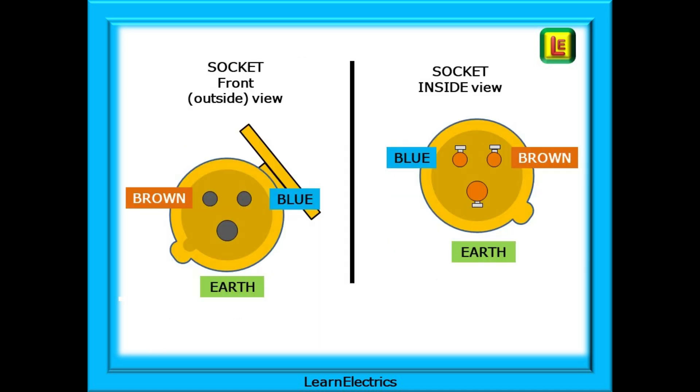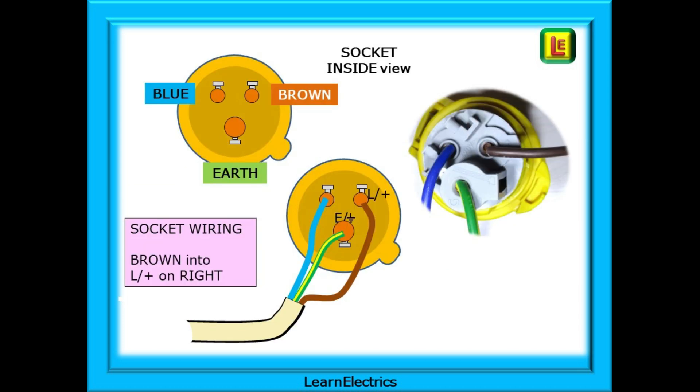Now for the socket, and when the casing is opened the terminals will be as shown. Brown will now be on the right with blue on the left. Conductor connections will be green and yellow into earth and brown into L plus on the right, then finally blue into the empty terminal on the left.